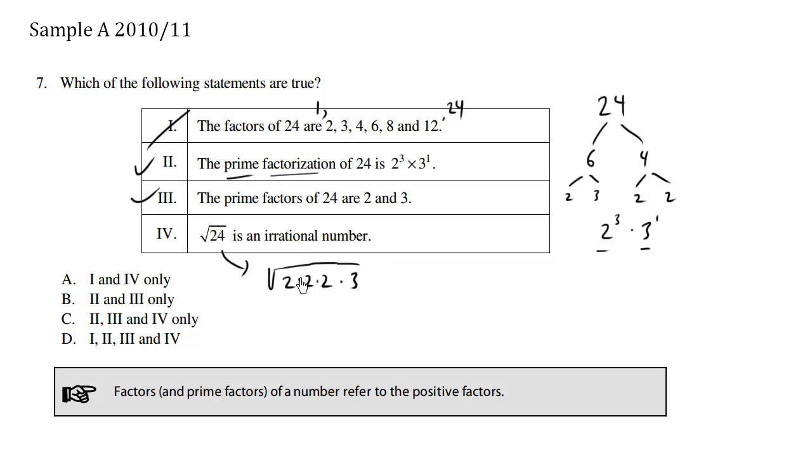Now we know that we can collect pairs because this here, the square root sign is essentially index 2. So for every 2 friends, we pull out one of them. So this essentially is equals to 2 root 2 times 3.